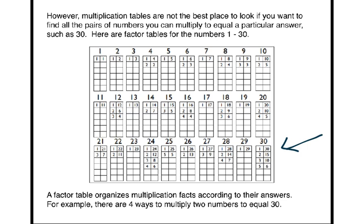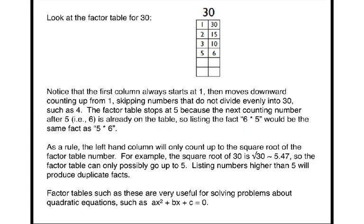1 times 30, 2 times 15, 3 times 10, and 5 times 6. Let's look at the factor table for 30. Notice that the first column always starts at 1, then moves downward, counting up from 1, skipping numbers that do not divide evenly into 30, such as 4.